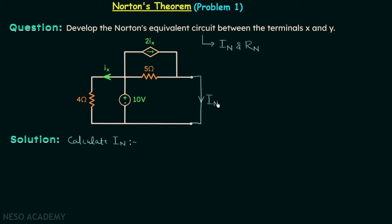To calculate current In we will focus on this node. Current leaving this node is In. Current entering this node is 2 times Ix, and one more current entering is I1. Applying KCL at this node gives In equal to I1 plus 2 times Ix — this is equation number 1. Our main aim is to find current In, which requires calculating I1 and Ix.